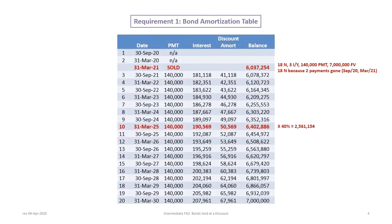Let's begin with the bond amortization table. It's important to note that in this case the bonds were issued on April 1st, 2020, but they were not actually sold until March 31st, 2021 — a whole year later, meaning two payments have passed. The amortization schedule has a total of 20 payments, but the first two did not exist, so the remaining number of payments is 18.